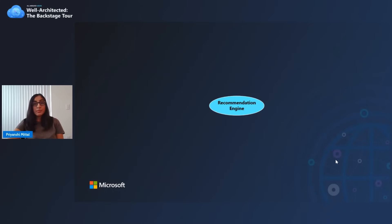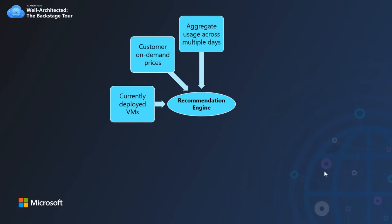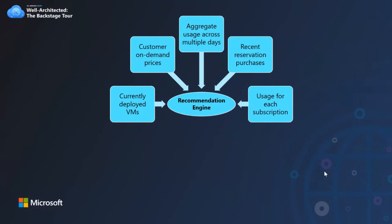Let's look at what data points we use in the recommendation engine. If your resources are shut down regularly, the simulation won't find any savings and no purchase recommendation is provided, so it looks at currently deployed resources for VMs. It takes into account any special discounts you may have on your pay-as-you-go or on-demand prices. It aggregates usage across multiple days — 7, 30, and 60 days — considers any recent reservation purchases, and calculates usage for each and every Azure subscription.